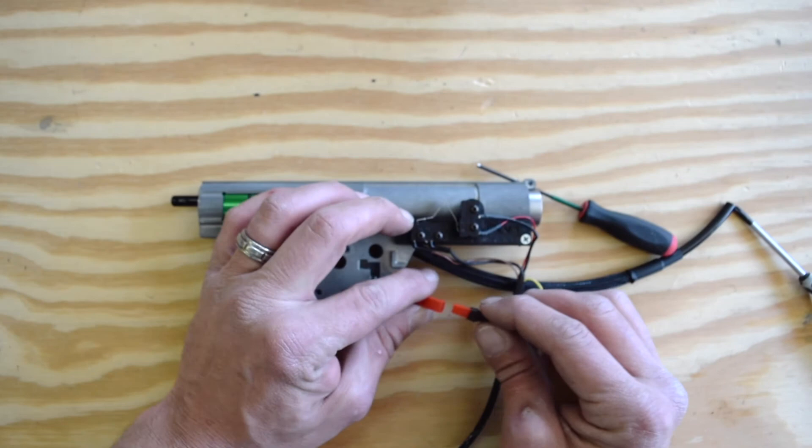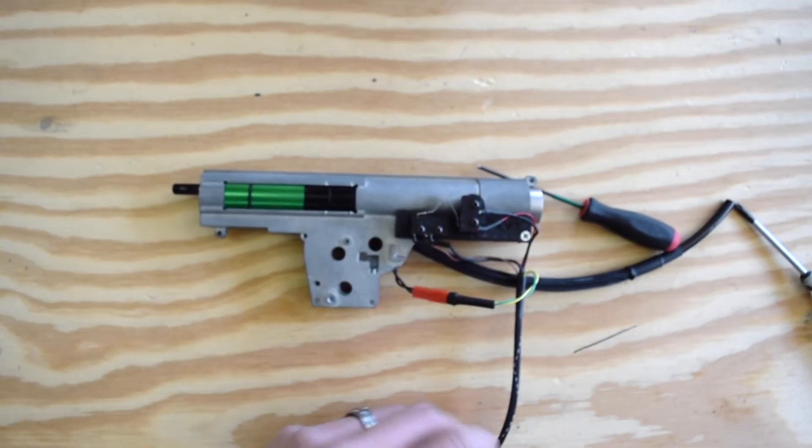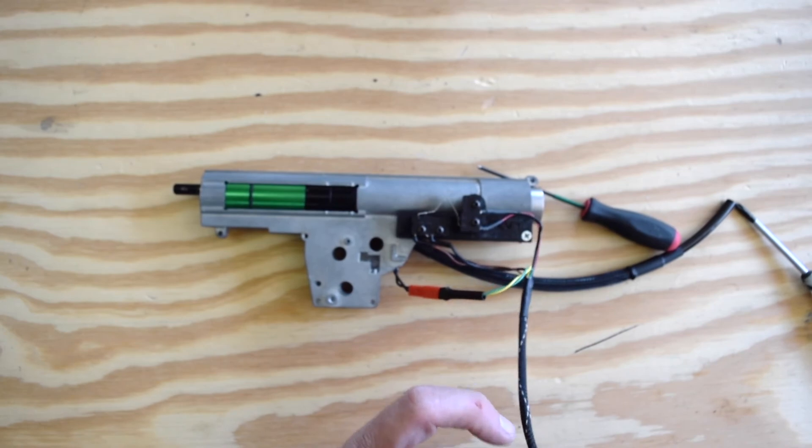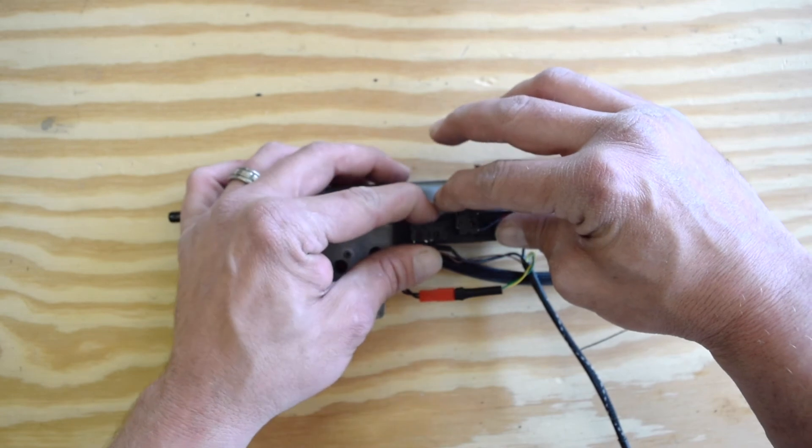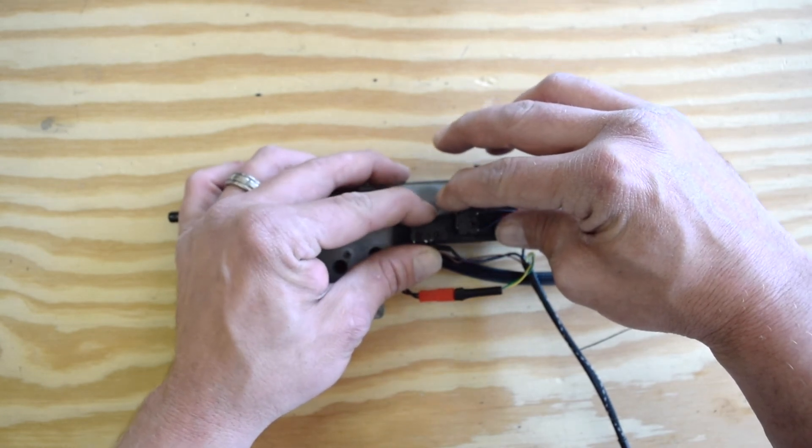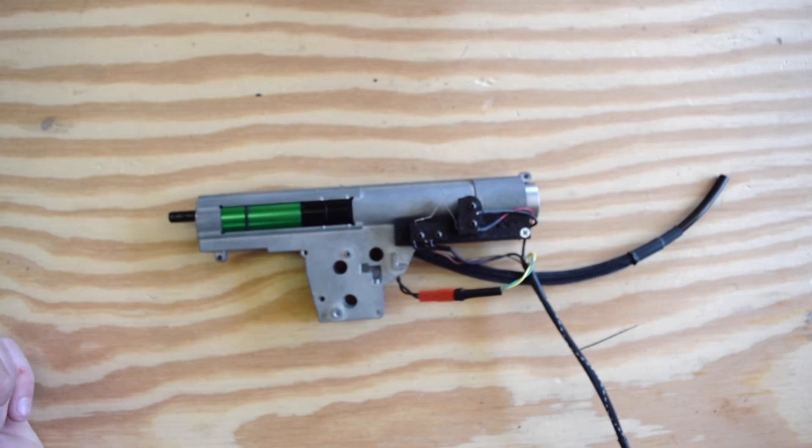So now we can plug in the solenoid. And finally we can plug in the FCU and battery and test the switches. The last thing to do now is just to install it back into the gun, just like any other normal install. Thanks for checking out the video and I hope this helped.